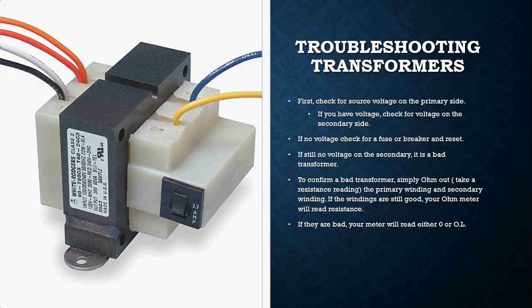When it comes to troubleshooting a transformer, they are relatively simple components to troubleshoot. The first thing you're going to want to do is make sure that you have power going to the primary side of the transformer. The primary side is on this side here — as shown in this picture.